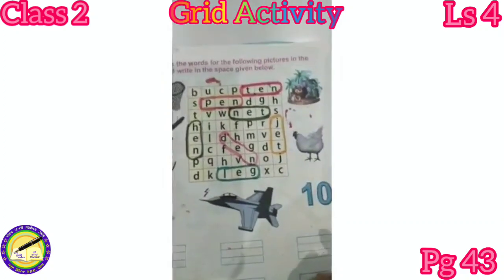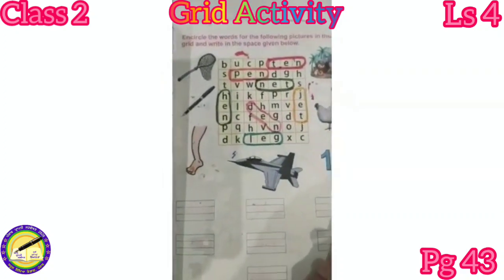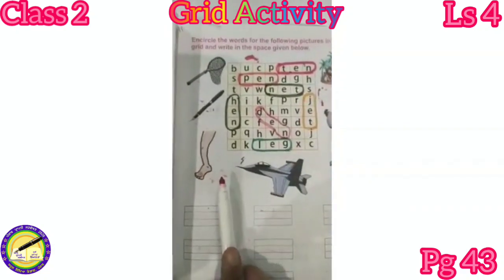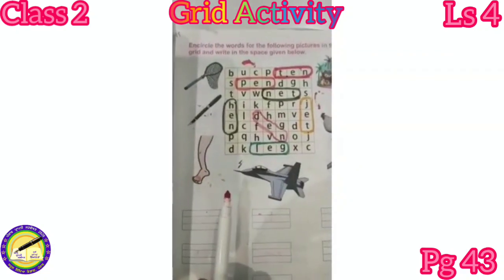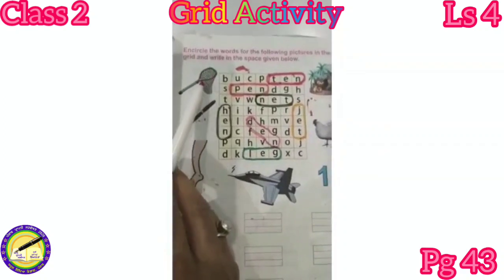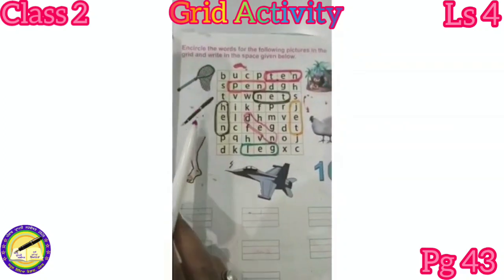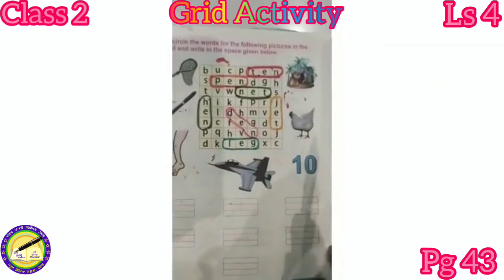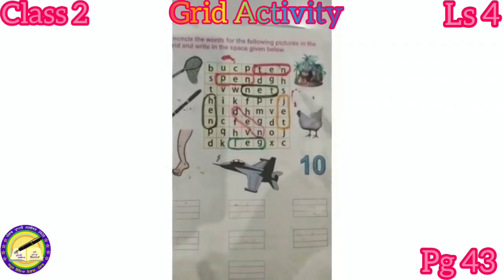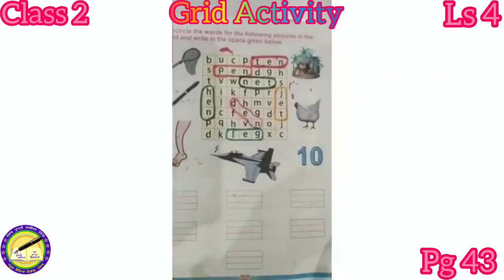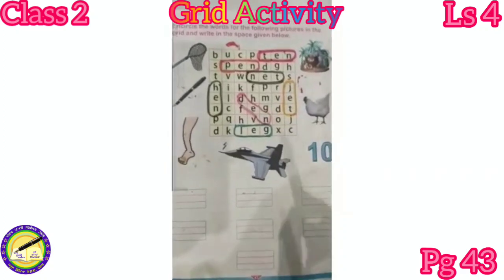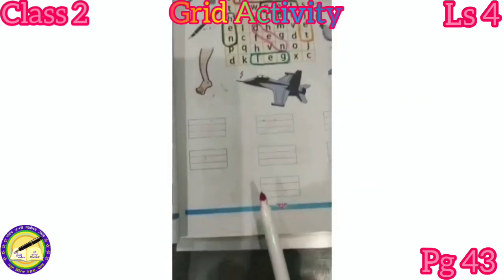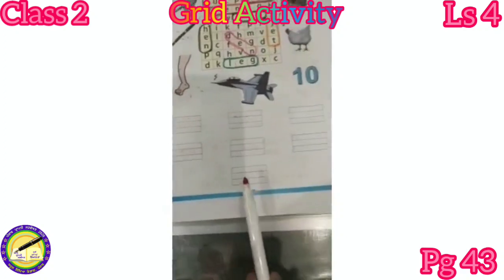Now once again, look at the pictures and look at the words. You got all the words now: net, pen, leg, jet, ten, hen, and then. Children, you have to write all these words in the space given here. This is your homework.